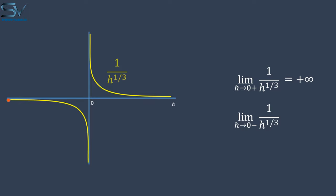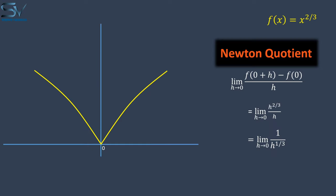However, as h approaches the origin from the left limit, the function approaches negative infinity. Because the limits on the left and right are different, its limit will not exist at the origin.